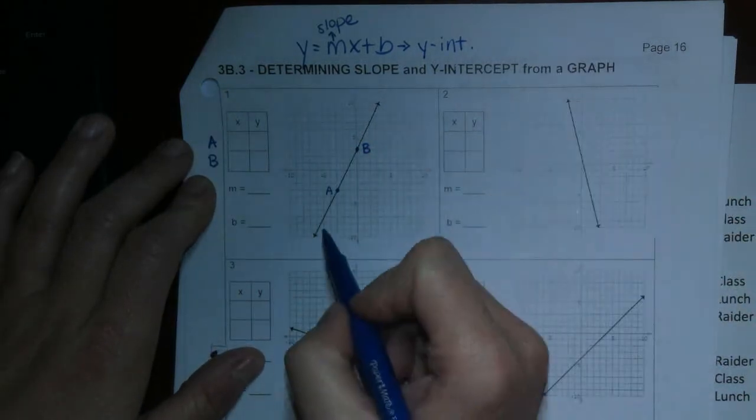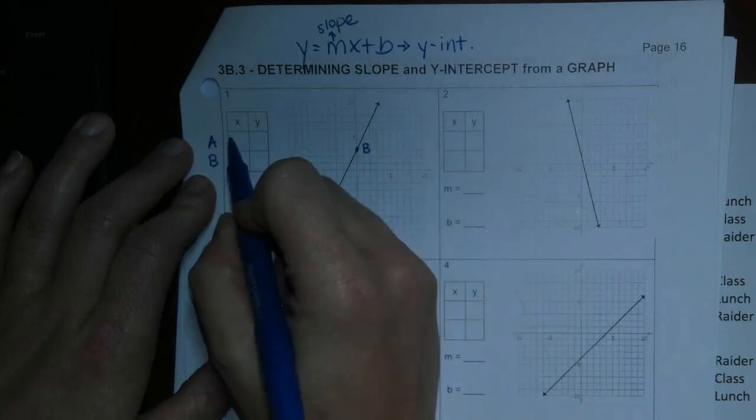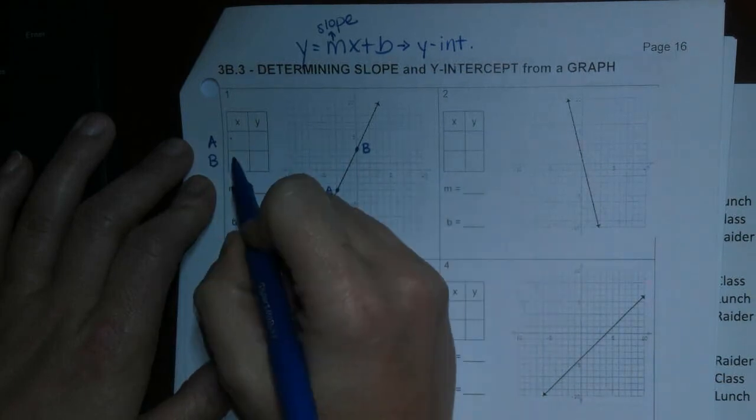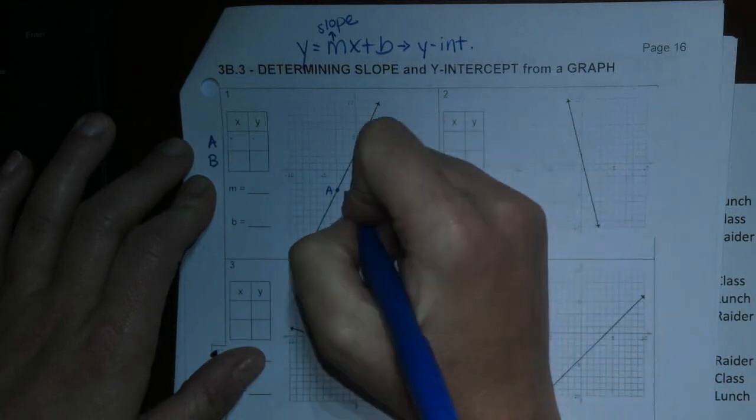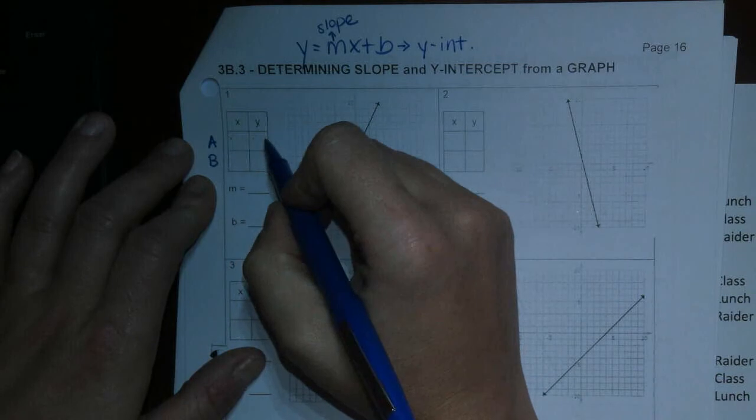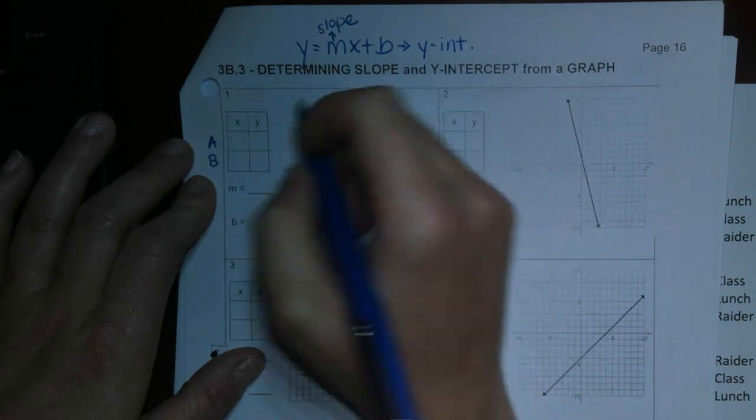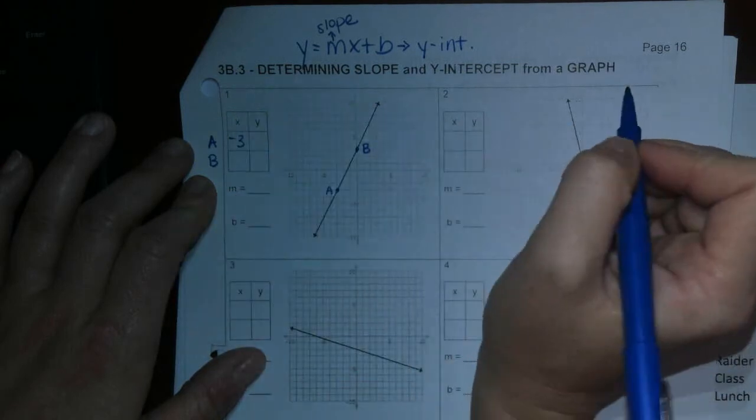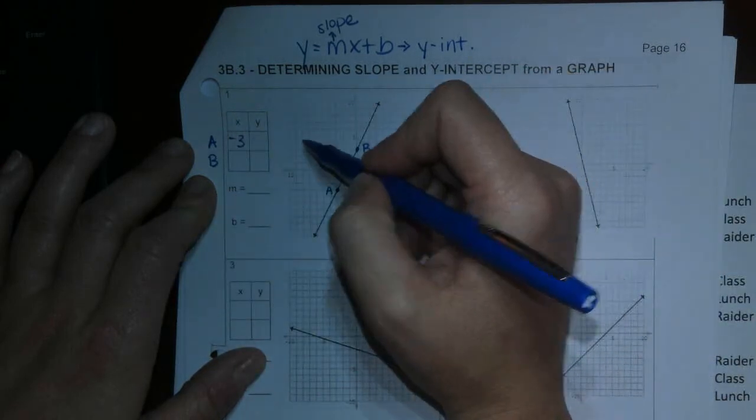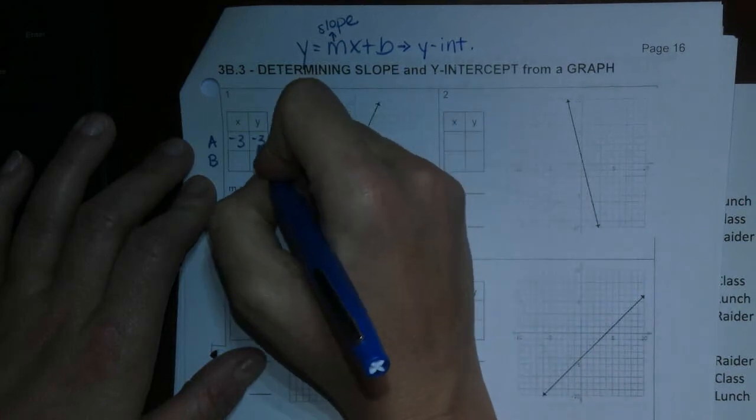And so what we're going to do is we're just going to put their ordered pair of this point here, x, y, ordered pair of this one here, x, y. Okay, so we have the A, point A is negative 1, 2, 3. Negative 3 is our x value. And our y is negative 1, 2, 3. Negative 3.